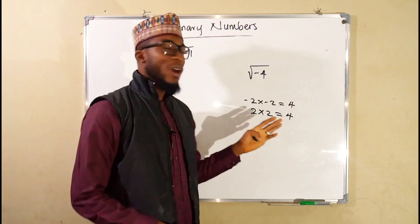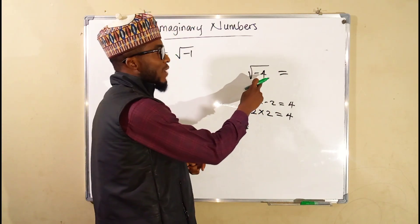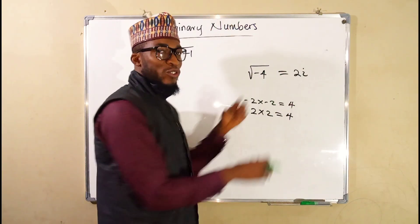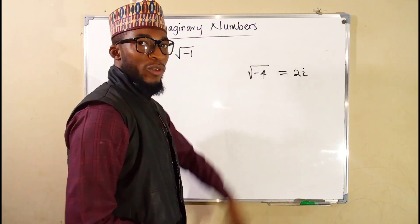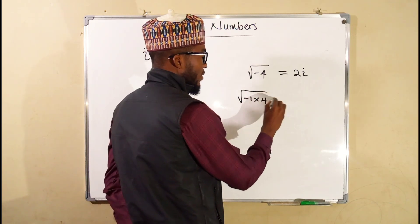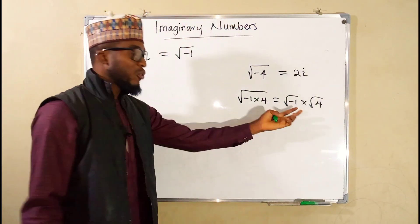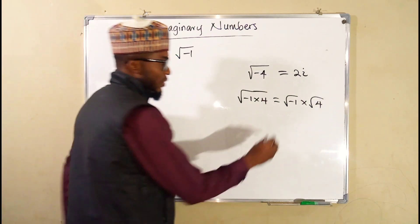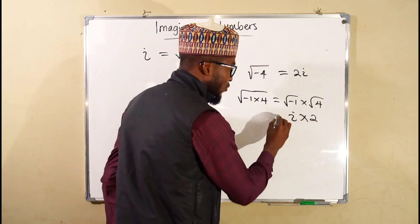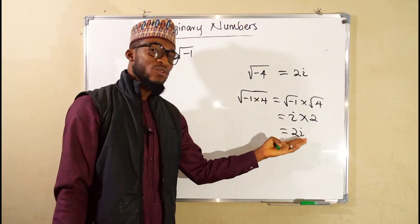So whenever you have the square root of a negative real number, first consider the real number — here it is 4, and the square root of 4 is 2 — but you attach i. The square root of negative 4 can be written as the square root of negative 1 times 4, which equals the square root of negative 1 times the square root of 4. The square root of negative 1 is i, and the square root of 4 is 2, so i times 2 gives 2i. Therefore, the square root of negative 4 is 2i.